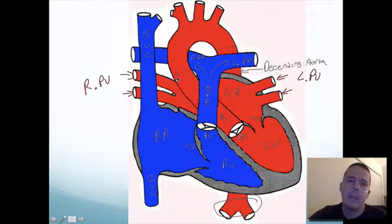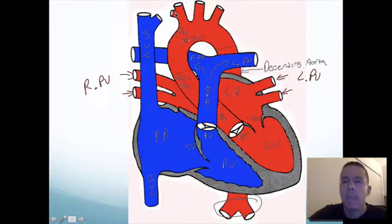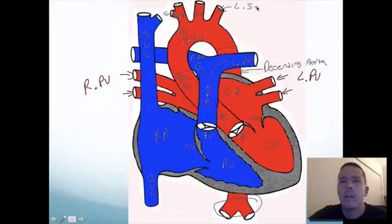Over here you have the ascending aorta. Traditionally in the topics that I talk about, I will write AO for aorta. And this is the aortic arch. A lot of people tend to forget the names of the different innominate arteries. There are three: the brachiocephalic artery, the right common carotid artery, the left carotid artery, and the left subclavian artery.